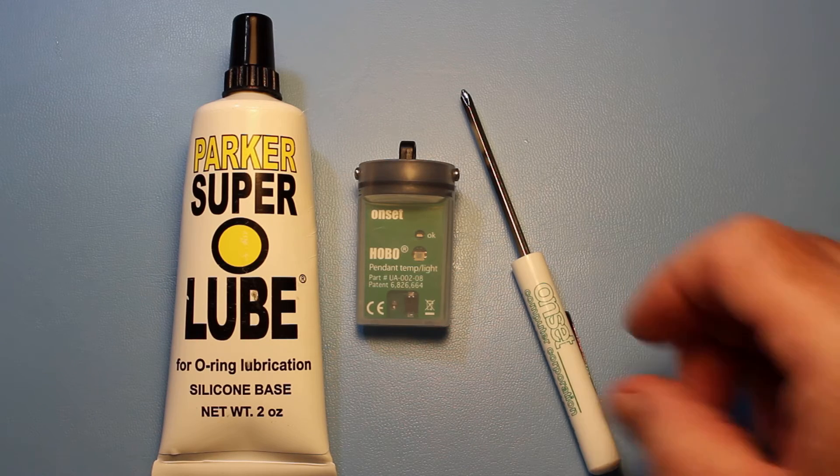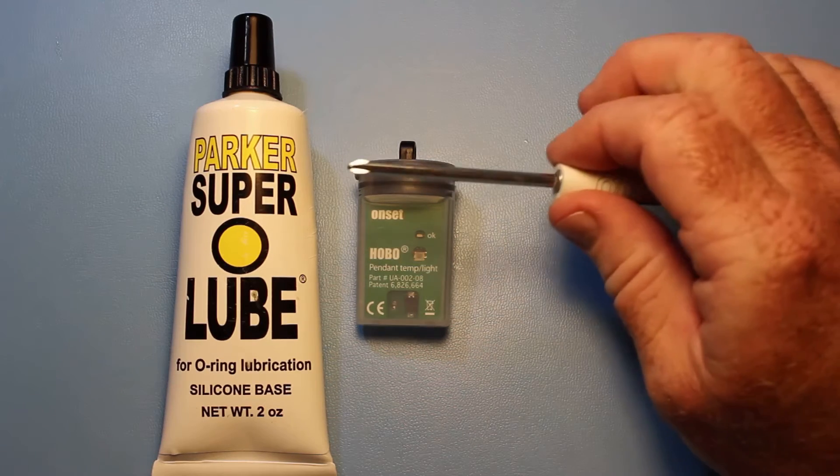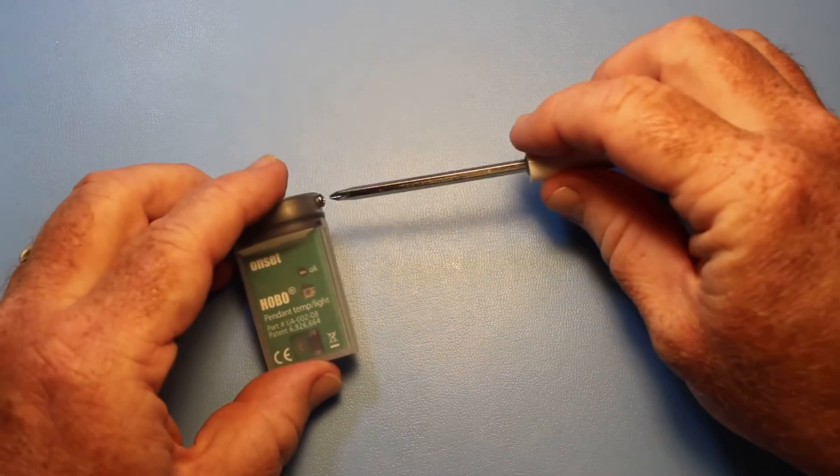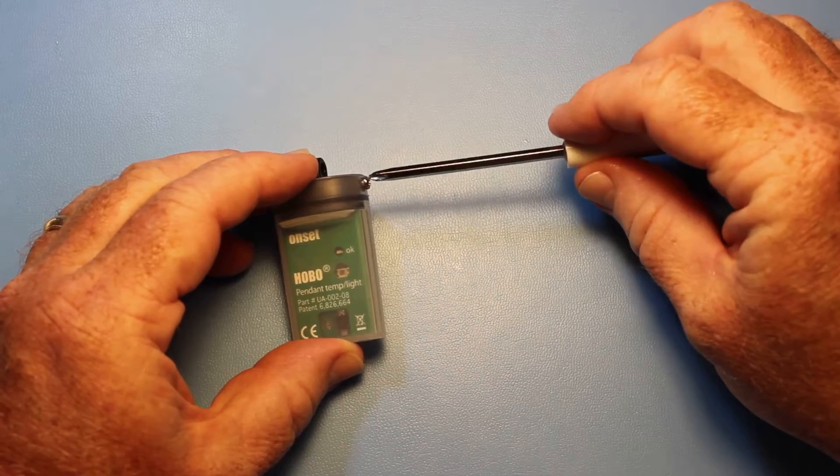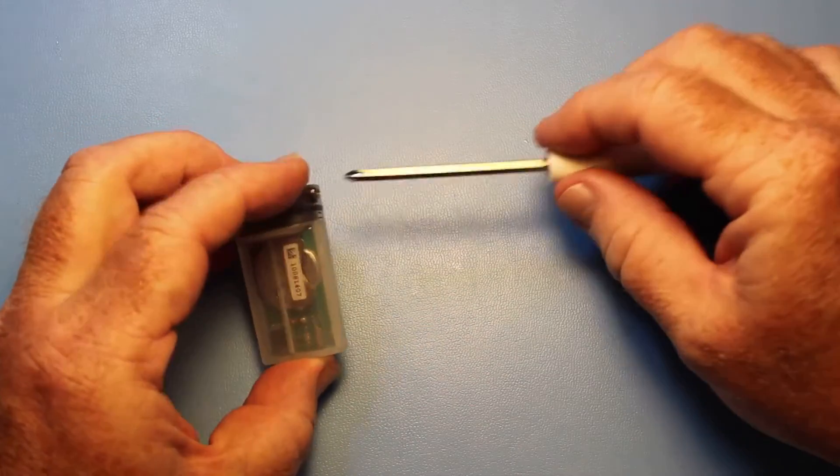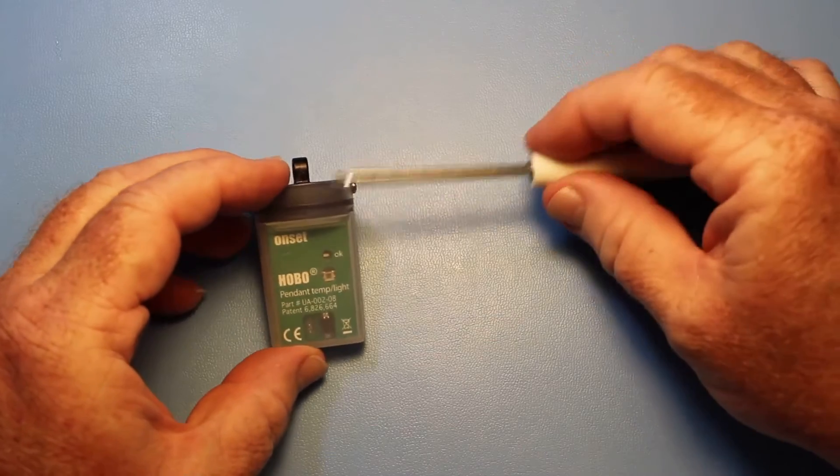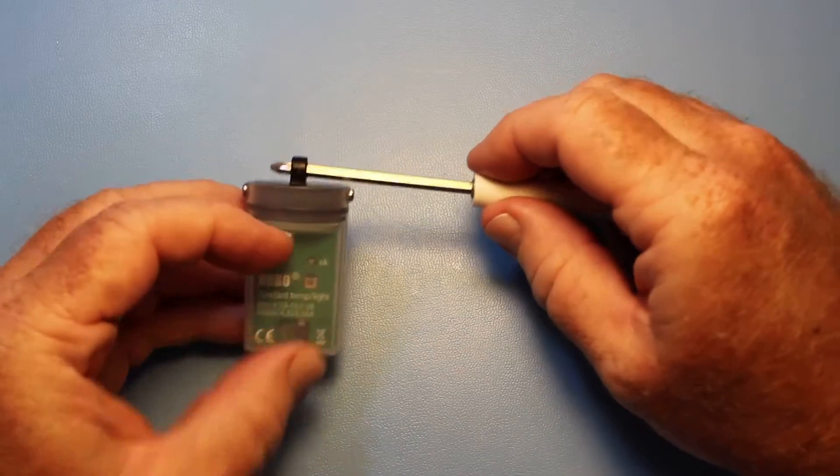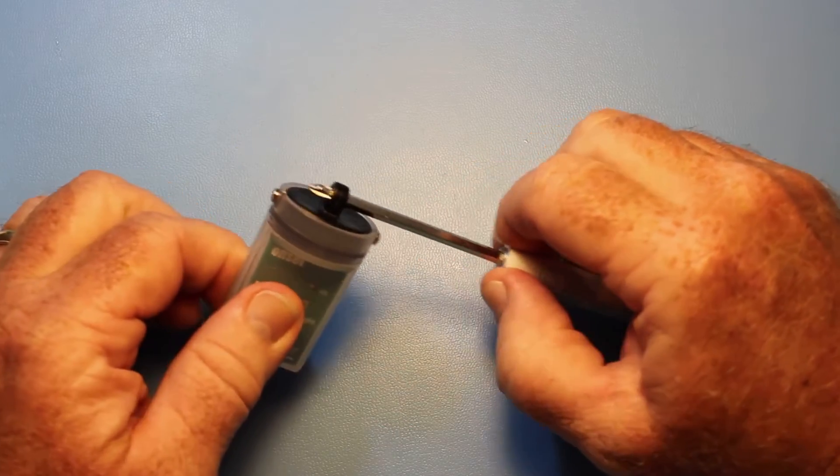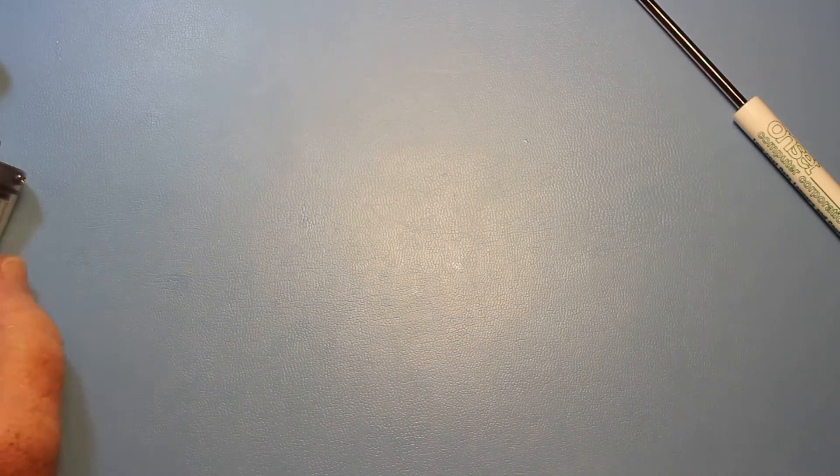So the first thing we're going to do, use your Phillips screwdriver and remove the two stainless steel screws that hold the end cap in place. Once those are removed, you can actually use your screwdriver, put it through the bale in the top of the end cap, and pull and it will pop right out of place. We've already done that on another logger here.